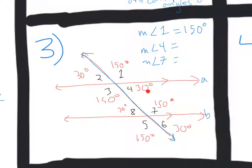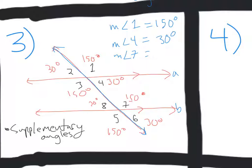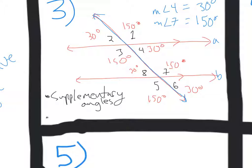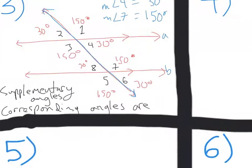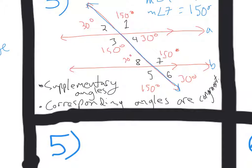With that, we pretty much have everything that we need to solve the problem. Angle 4 is right here. That's definitely 30 degrees. And you can say that you knew that because of supplementary angles. And then angle 7 right here, that's 150 degrees. And the reason that we know that is because corresponding angles are congruent, or they are equal. So that's our justification.